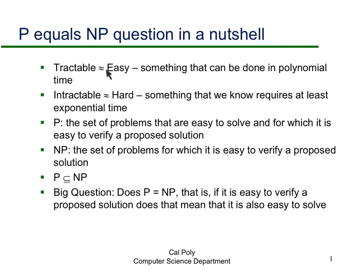Tractable is a word used a lot in computer science — it's basically a synonym for easy, which is a synonym for something that can be done in polynomial time. Intractable or hard is something we know requires at least exponential time. P is going to stand for the set of problems that are easy to solve and for which it's easy to verify a proposed solution.